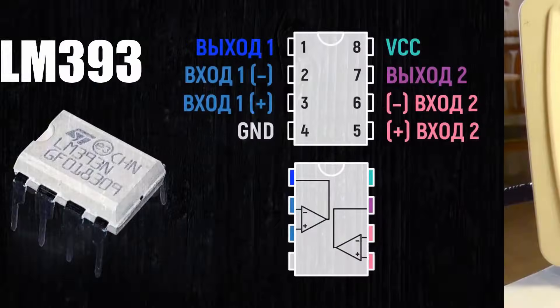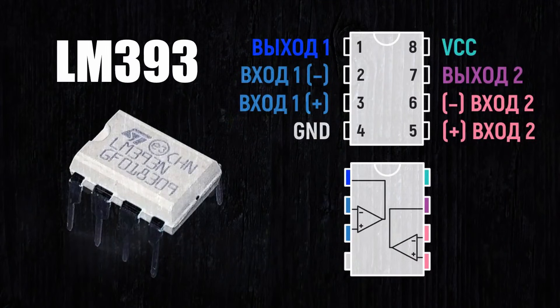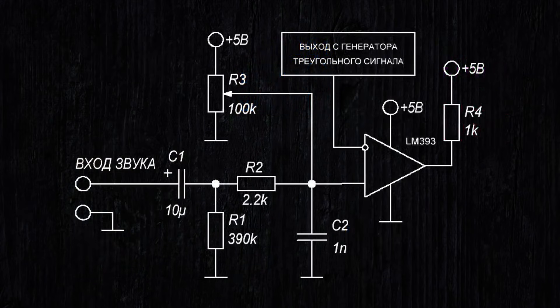Now we need to take a comparator, for example, the LM393, and compare the input low-frequency voltage with our triangular signal.